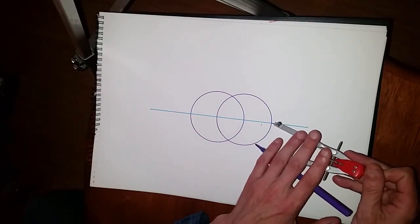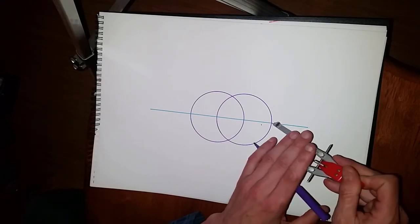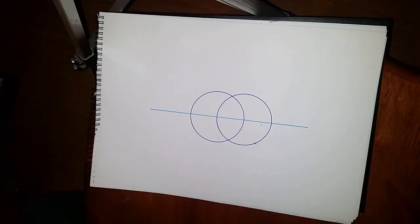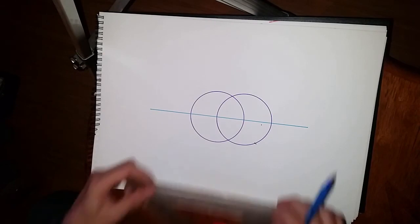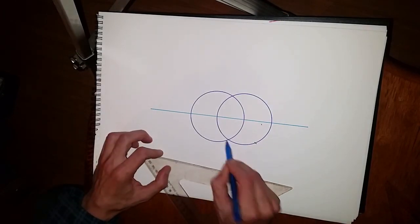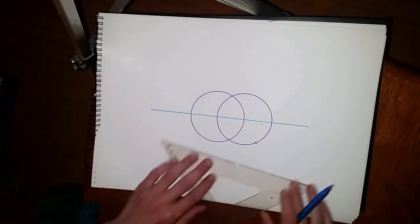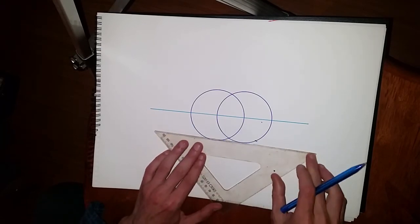Now we need to do one more mark on the edge there, and we just mark that there. Now that's important, because what we need to do is now draw a line using this point and that point, and we're going to draw a parallel line to that top.